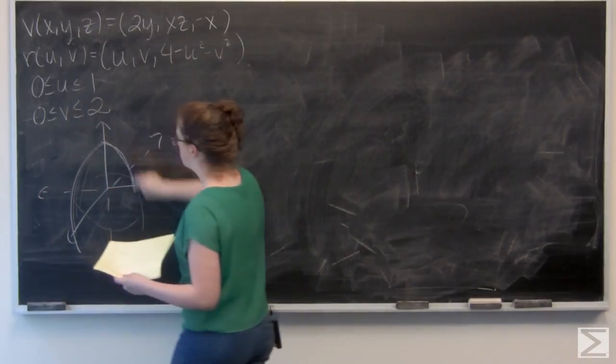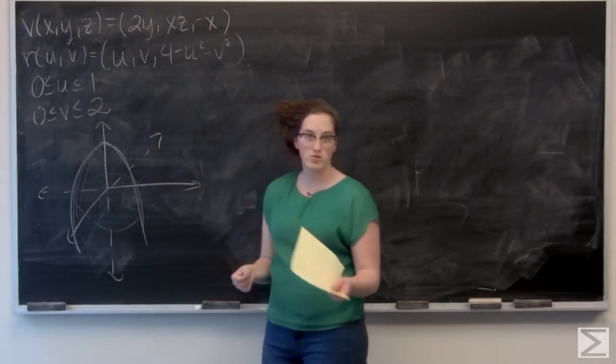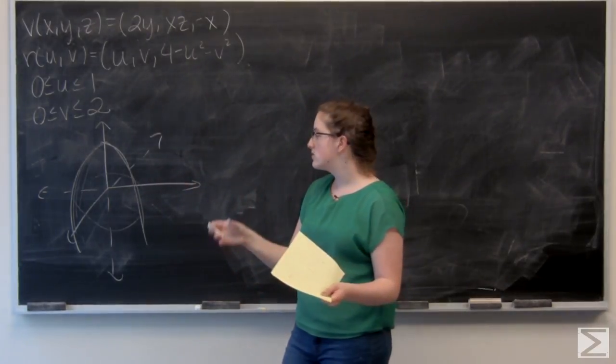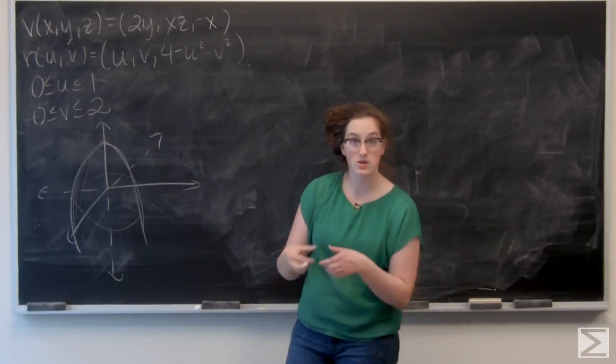So it kind of goes down like that. And then I'm given bounds for u and v. u goes from 0 to 1, v goes from 0 to 2. So the projection into the x, y, or u, v plane, if you will, is going to be a little rectangle.